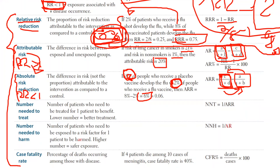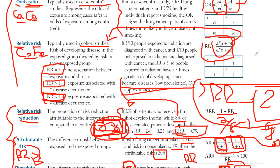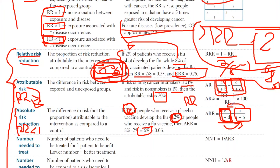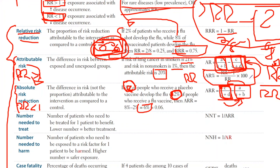There's an alternate way to calculate attributable risk if you're only given the relative risk rather than the full table. The formula is: (relative risk minus one) divided by relative risk, then multiply by 100 to get a percentage. This gives you the same exact answer as using the table-based formula. So this covers relative risk reduction, attributable risk, and absolute risk reduction.